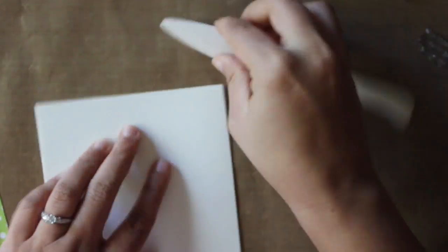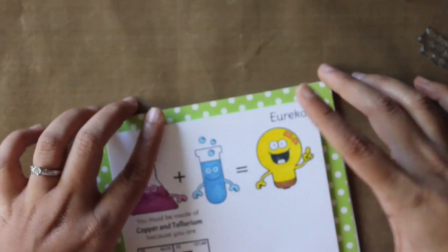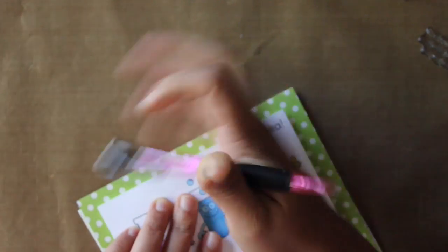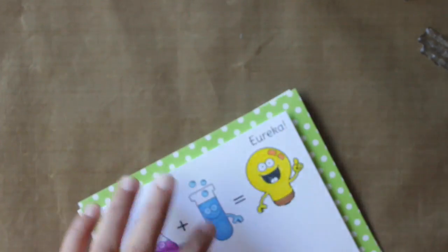Now I'm moving on to my card base. So this is my white card base, five by six and a half. I'm just erasing some pencil lines that I had previously made to cut the white card.